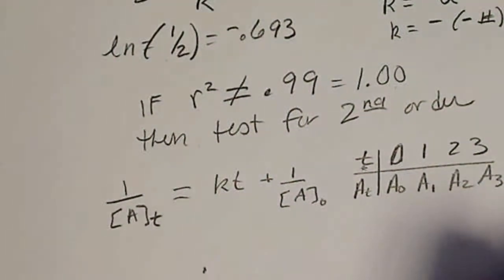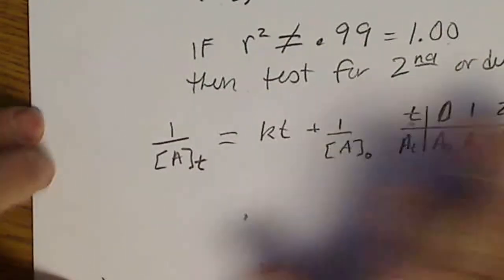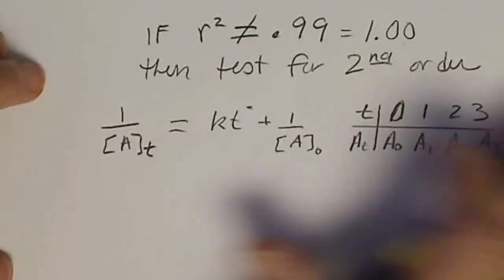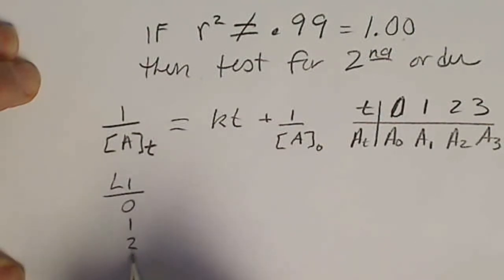We're going to not use the natural log to test. L1 is still going to be times 0, 1, 2, and 3.